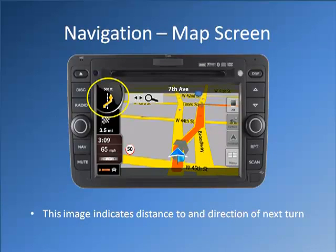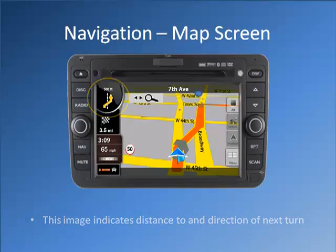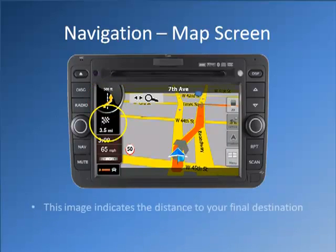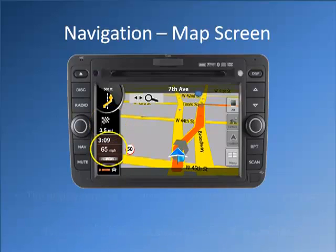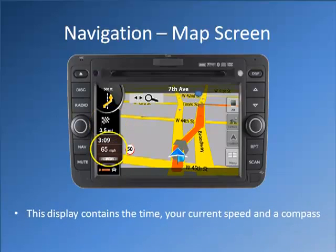This image indicates distance to and direction of next turn. This image indicates the distance to your final destination. This display contains the time, your current speed, and a compass.